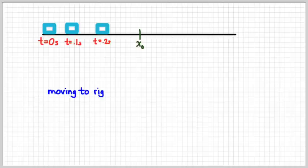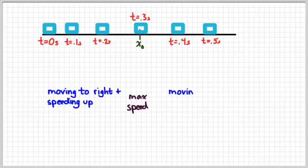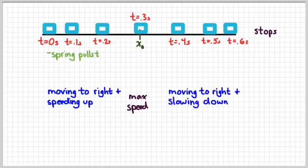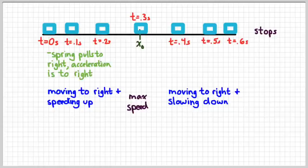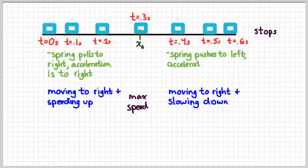Kind of redrawing my picture here. We move to the right and speed up, reach a maximum speed, and then we move to the right, but slow down. Now we're going to consider the acceleration. During the first interval, when the spring is pulling to the right, the acceleration is directed to the right. During the second interval, as it's slowing down, that means it's being pushed to the left. So the acceleration is directed to the left.